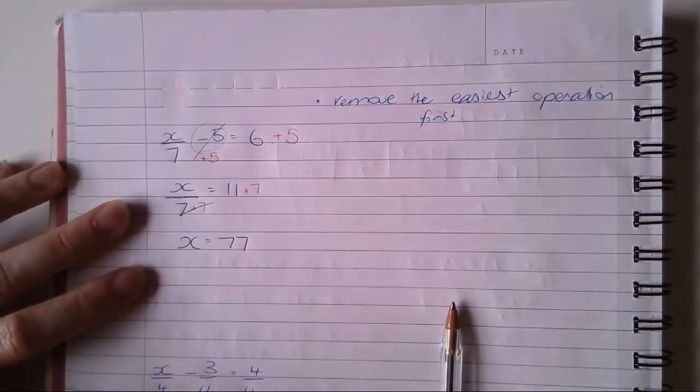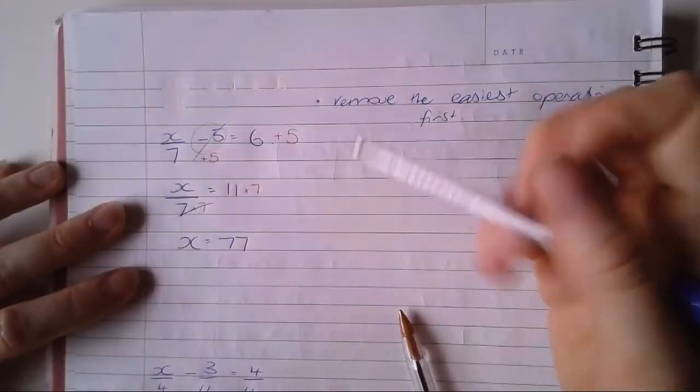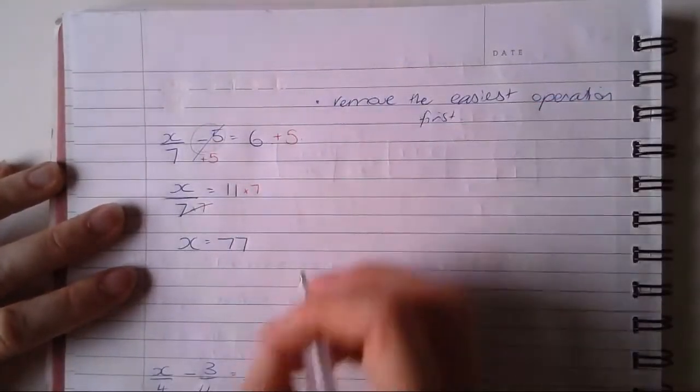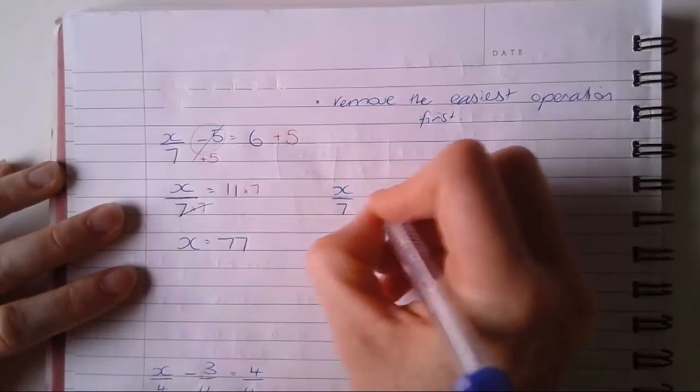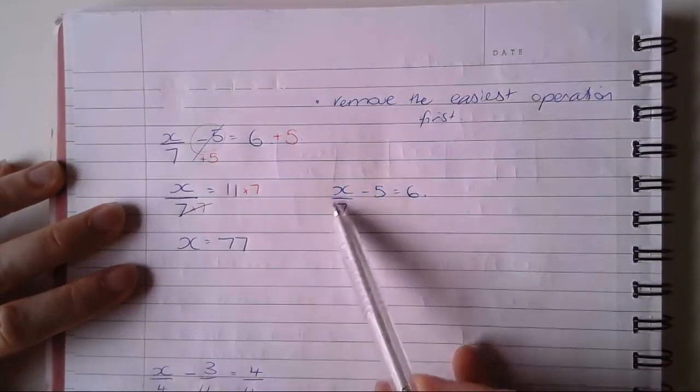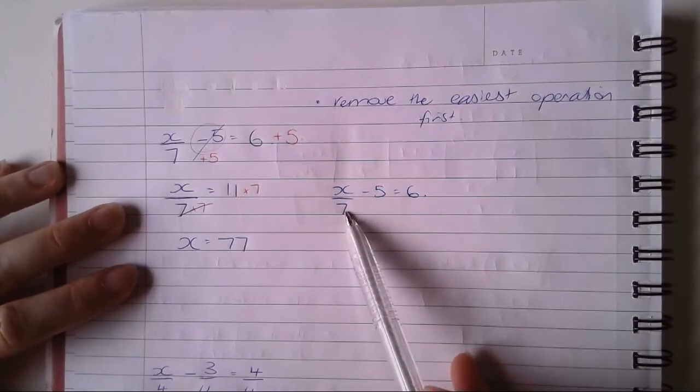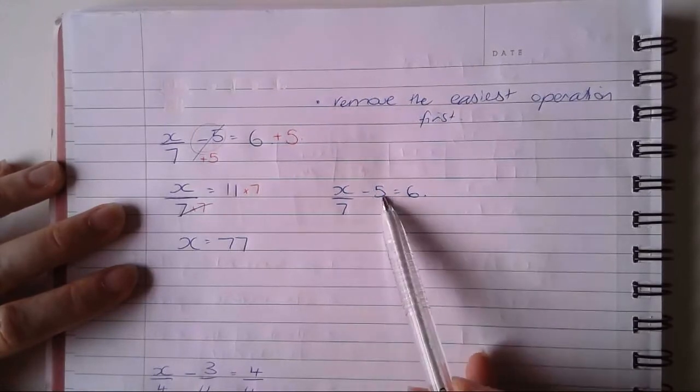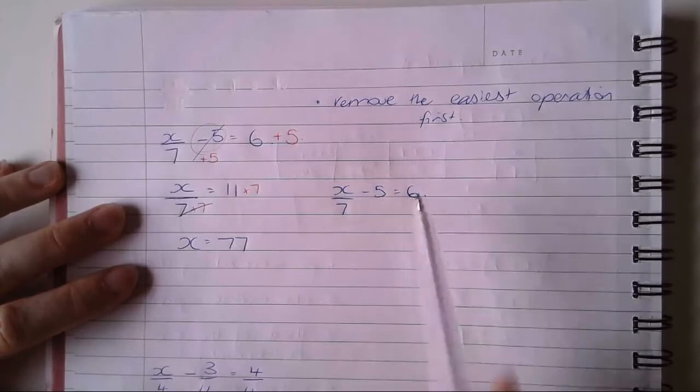Now we're going to place that back into our equation to see if we are correct. So I'm just going to rewrite it so it's a little clearer in its original form. So I've got 77 divided by seven, which is 11 minus five equals six. So I'm correct there.